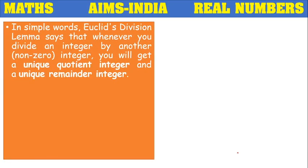In simple words, Euclid's Division Lemma says that whenever you divide an integer by another integer, you will get a unique quotient and a unique remainder.